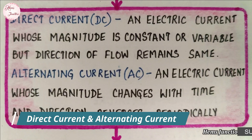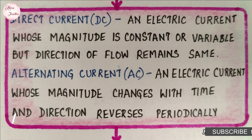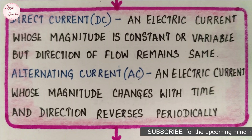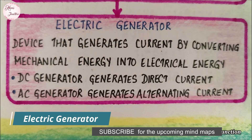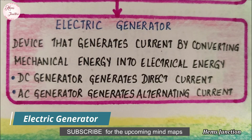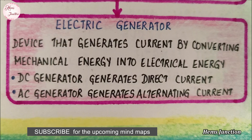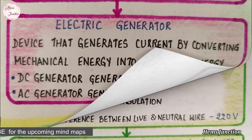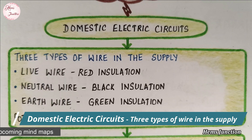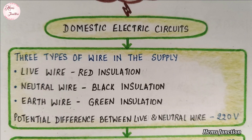Direct current and alternating current, electric generator, and domestic electric circuits. There are three types of wires in the supply with different insulation: live wire, neutral wire, and earth wire.